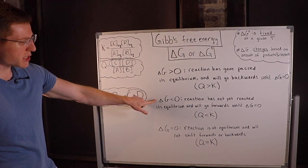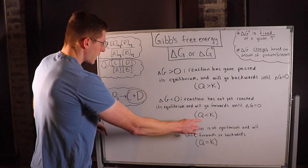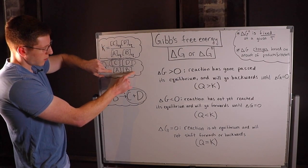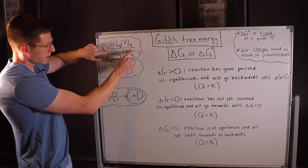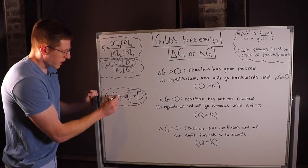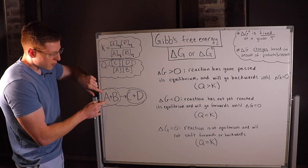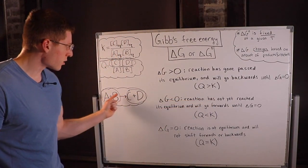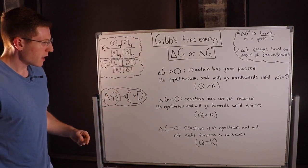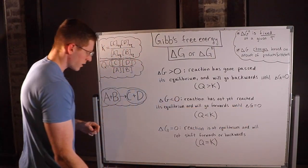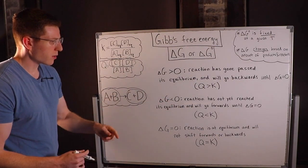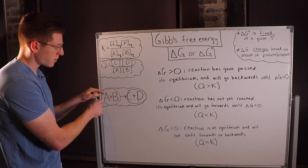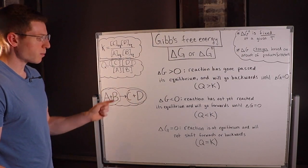When delta G is less than zero, this is the opposite — Q is less than K. The numerator of Q has gotten smaller or the denominator bigger, meaning we have too many reactants and haven't converted enough into products. Therefore the reaction has not yet reached equilibrium and will go forward to make more products until delta G equals zero. Delta G less than zero means the reaction is spontaneous as written; the reverse direction is non-spontaneous.